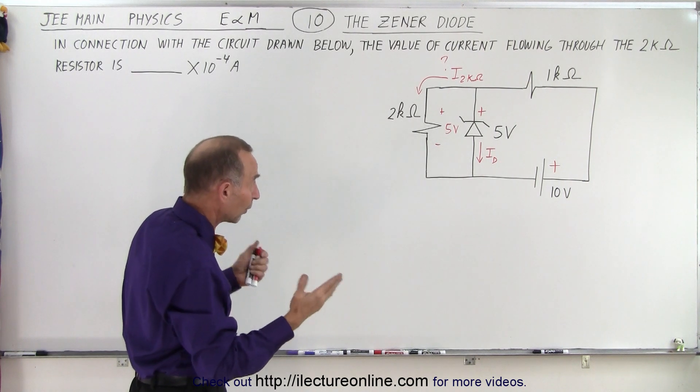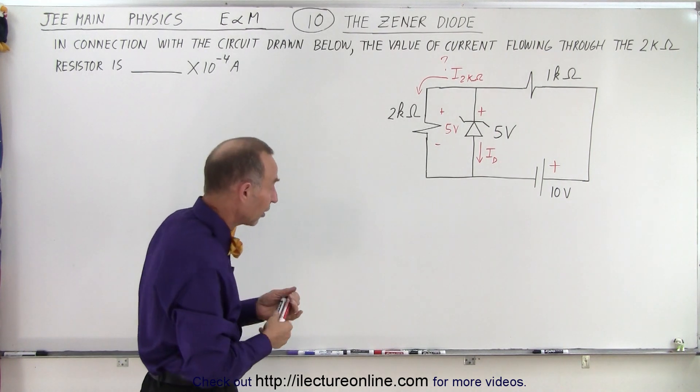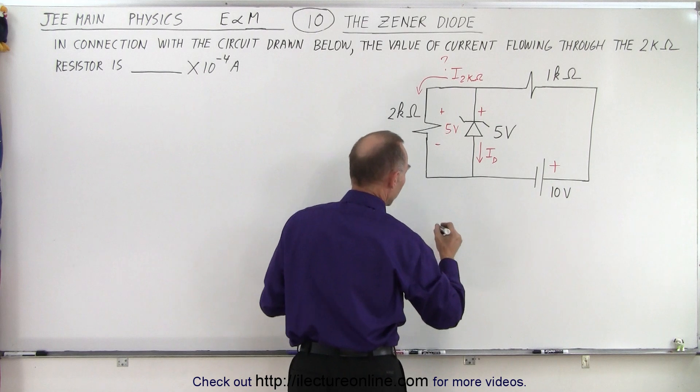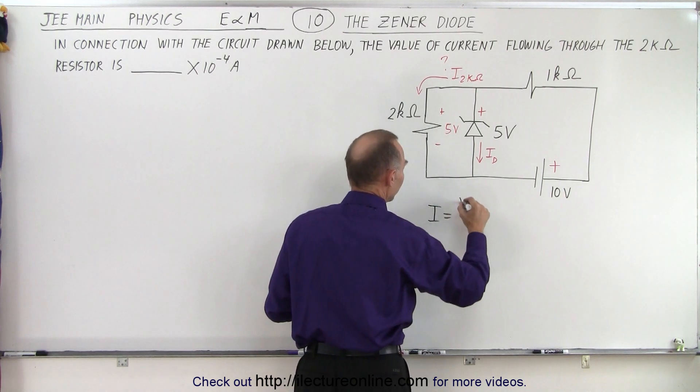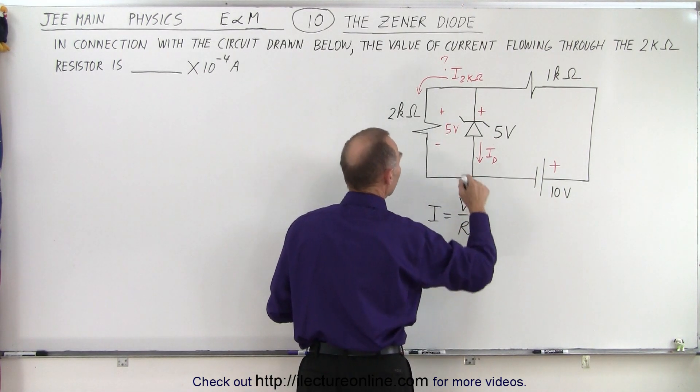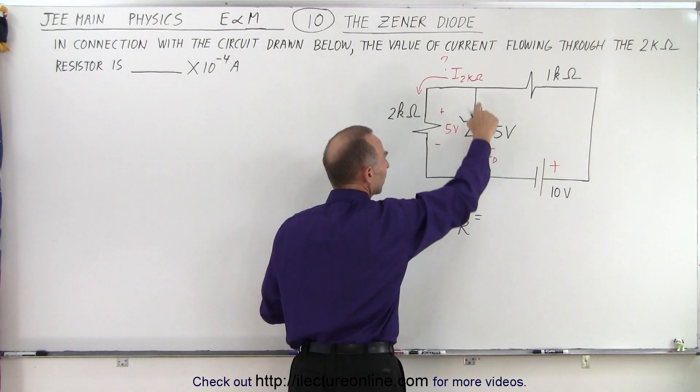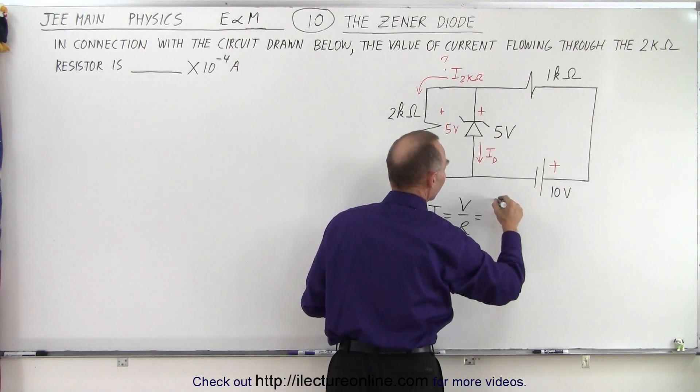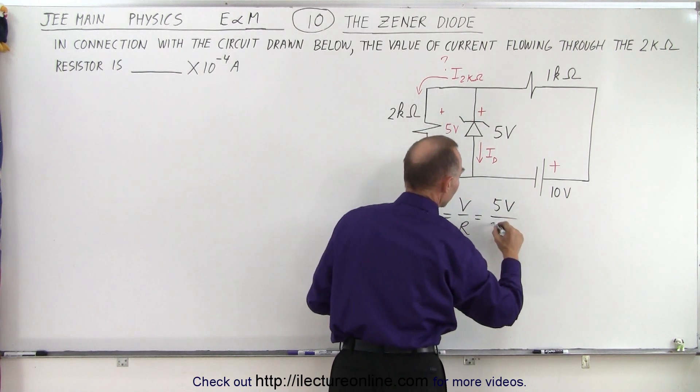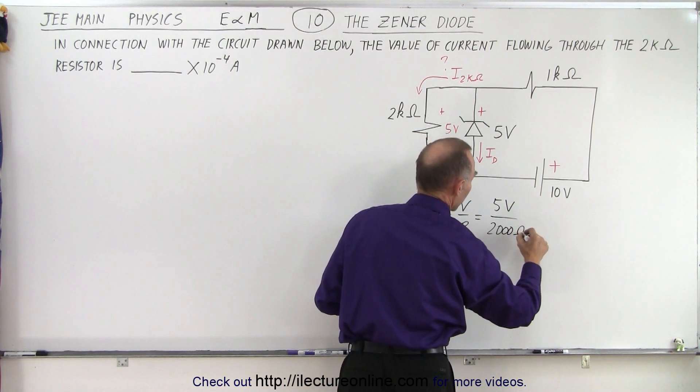Alright, so at this point, once you realize what the Zener diode does, you can simply use Ohm's law where I equals V over R. In this case, the voltage across this resistor, because of the Zener diode in parallel, will be equal to 5 volts, and the resistance is equal to 2,000 ohms.